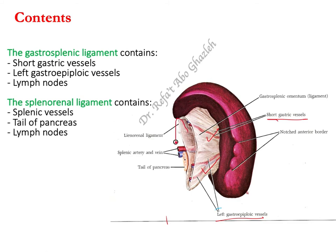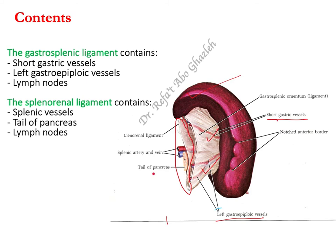The content of the splenorenal ligament contains the tail of the pancreas, as well as the splenic arteries and vein. The arterial supply to the spleen comes mainly from the splenic artery, which is a branch of the celiac trunk.